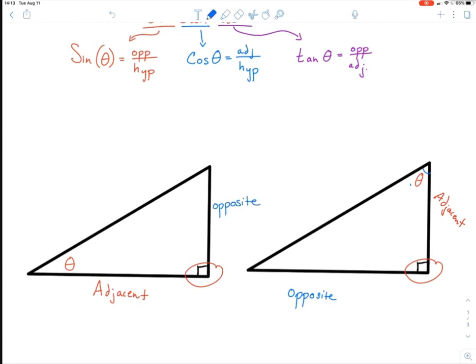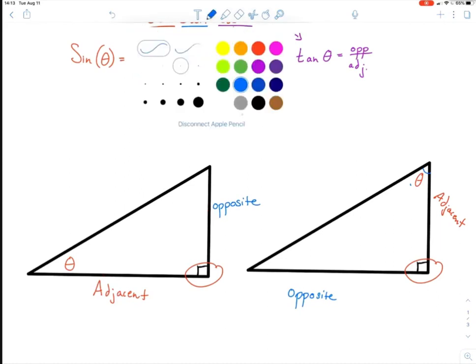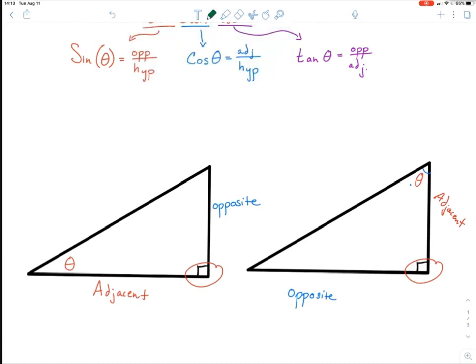So you always have to look for where is the angle, and then you know that the one that touches it is adjacent and the one that's opposite is far away. And that leaves us with the hypotenuse. The hypotenuse is going to be the one that does not touch your 90 degree angle. So this is my hypotenuse, and the hypotenuse is always going to be the longest side of the triangle.